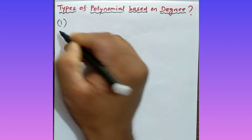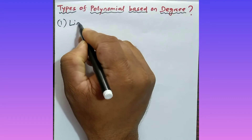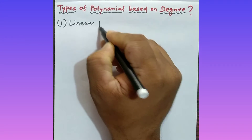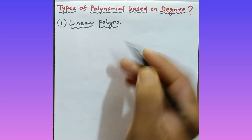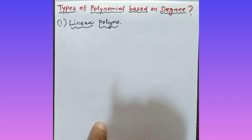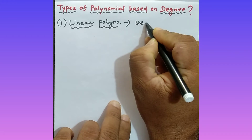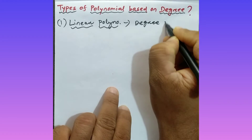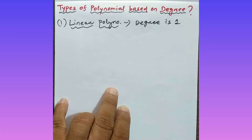See here, the first one I'm writing — that is called as linear polynomial. So what is the meaning of linear polynomial? A polynomial which is having degree equal to one. The polynomial whose degree is one, that is called as linear polynomial.